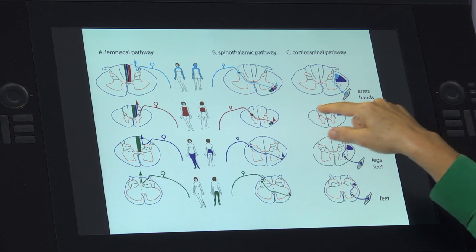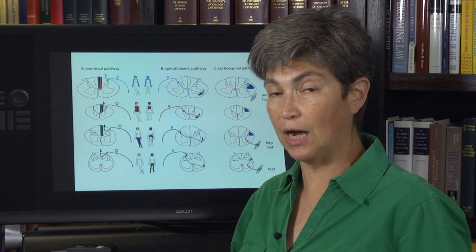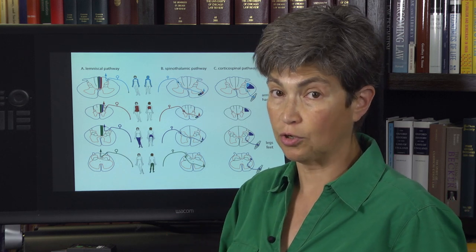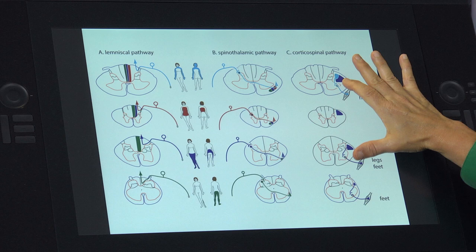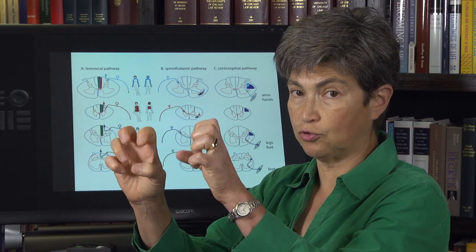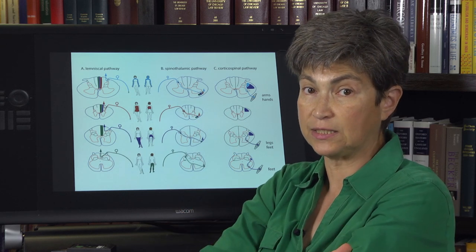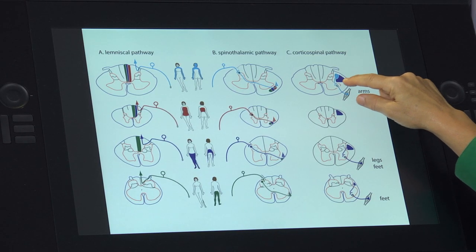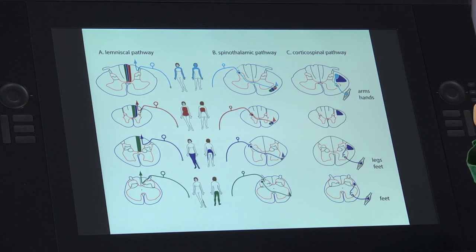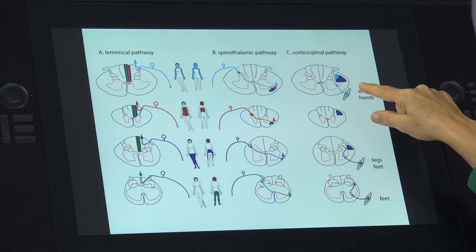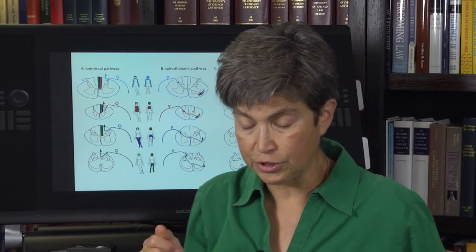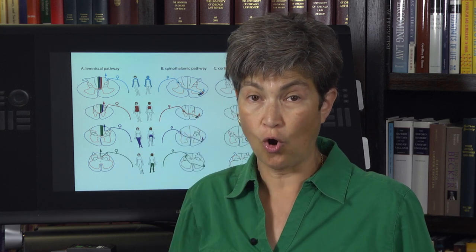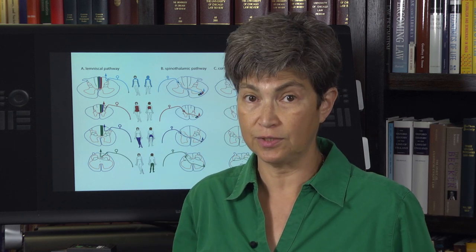The corticospinal tract does not terminate in the thoracic cord because we cannot individually control muscles in the trunk. So the corticospinal tract is a limb tract, and it is predominantly distal — a lot of control over the fingers and wrists, less over more proximal joints. It travels in the dorsolateral funiculus and terminates in the lateral part of the ventral horn. The key point is that the lateral corticospinal pathway is always ipsilateral to the muscles it ultimately influences.